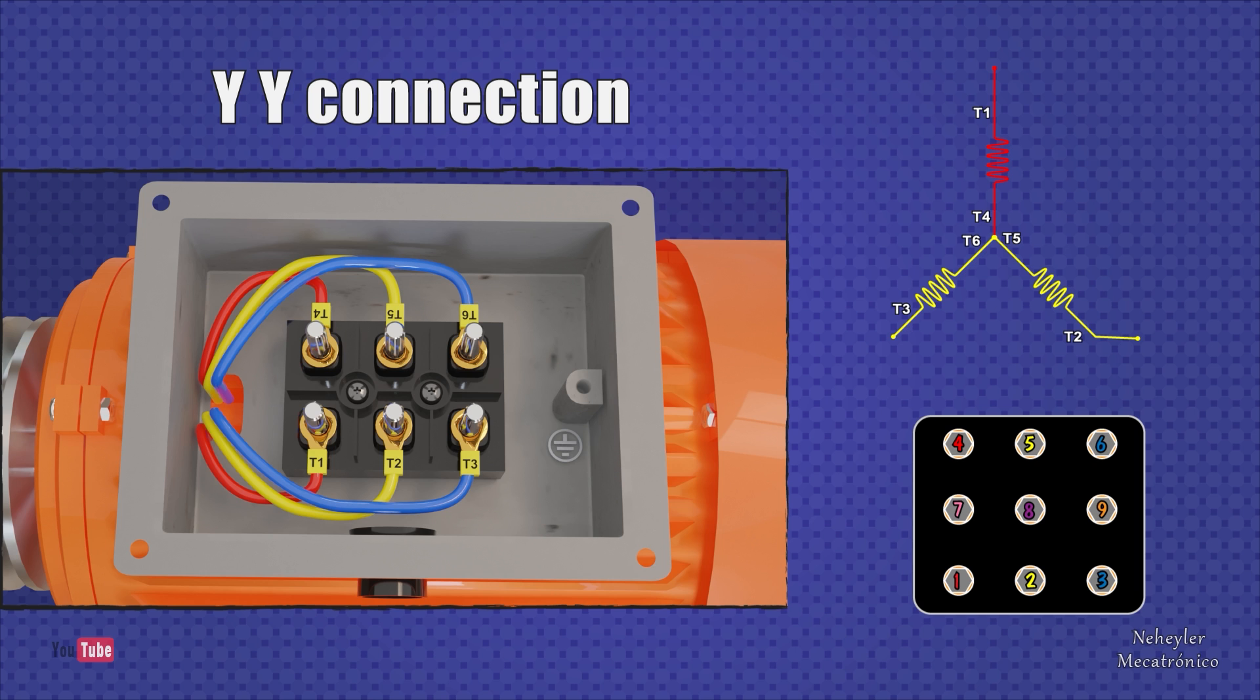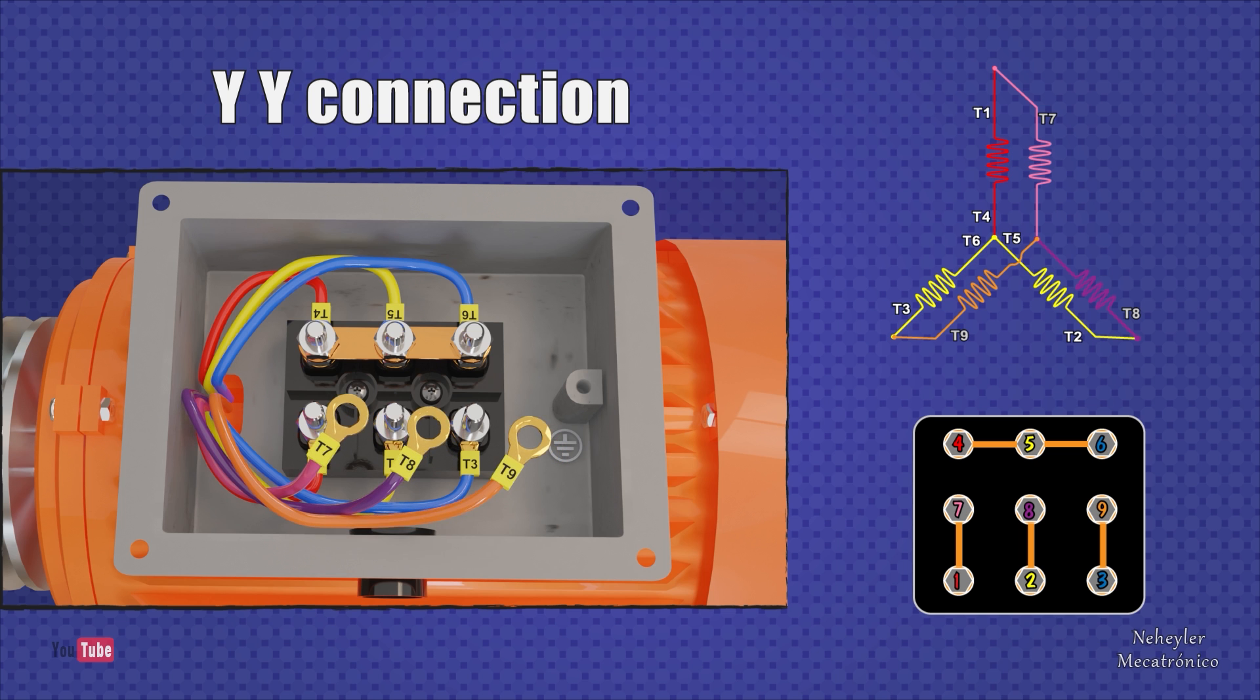What we need to achieve here is to make a star connection. To do this, you must join Terminals 4, 5, and 6 using metal plates. Since we already have the star connection, then we join the three remaining terminals that already have their internal star connection.